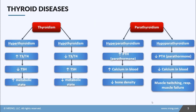Sometimes we can have excess or deficient amounts of a particular hormone. With hyperthyroidism, there is excess production of T3 and T4. Because of the negative feedback loop, the body is trying to tell the pituitary gland to turn off, so there's going to be a low level of TSH — but T3 and T4 are still being produced in spite of that. This leads to an increased metabolic state.